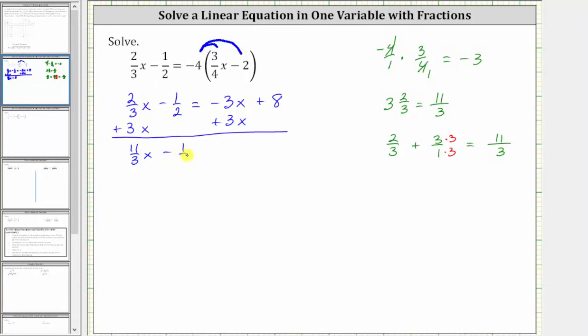And then we still have minus 1½ equals negative 3x plus 3x is zero, so the right side is now just 8.